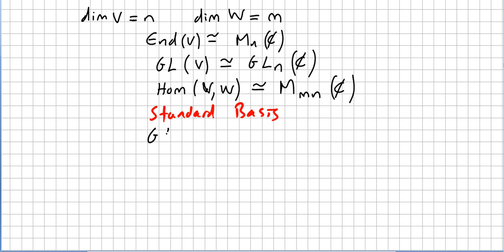For instance, the general linear group of one by one matrices with complex entries is isomorphic to the non-zero complex numbers C*.